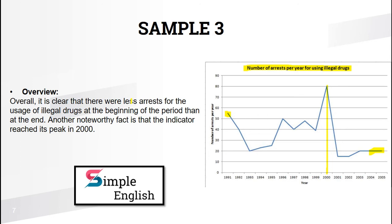One more important rule about writing an overview: you cannot write any numbers except for years. For example, you cannot say 'the indicator reached its peak in 2000 at about 80.' No data values are allowed — only years are acceptable in the overview. That's it for overviews of line graphs.